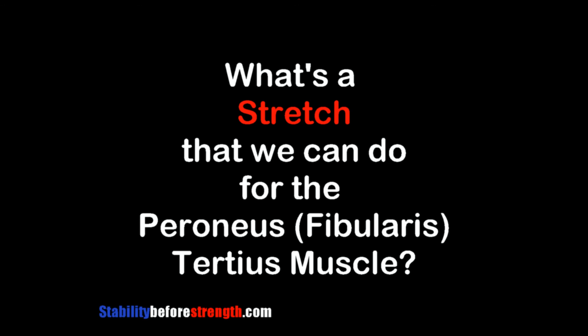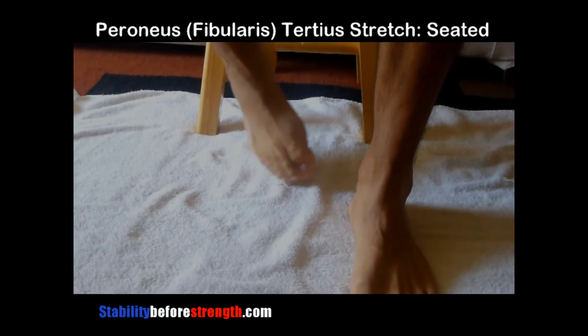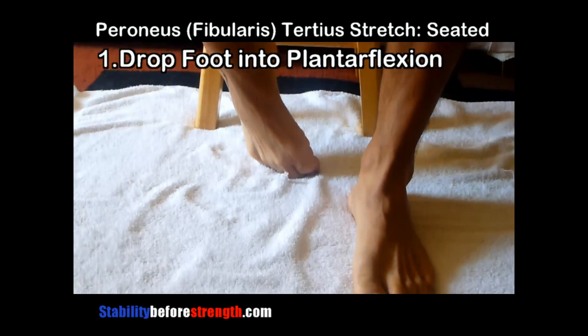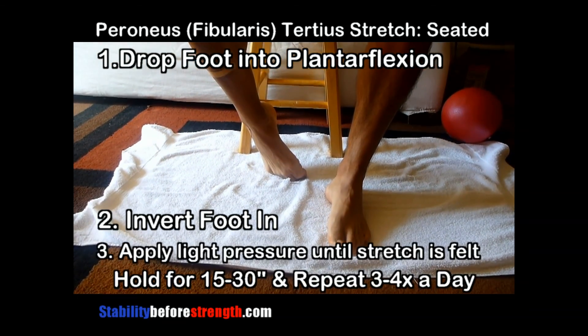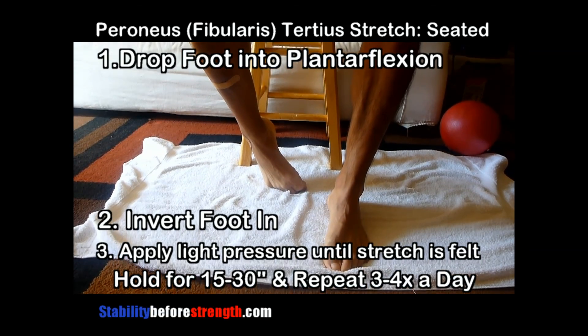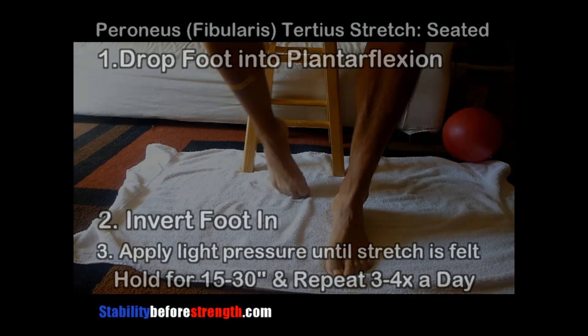What is the stretch we can perform to help stretch out the peroneus tertius? Think of all the actions of the muscle and do the opposite. Sitting in a chair, curl your toes, drop your foot into plantarflexion, and try to invert your foot inward, gently applying pressure until you feel a stretch. Hold for 15 to 30 seconds and repeat three to four times a day.